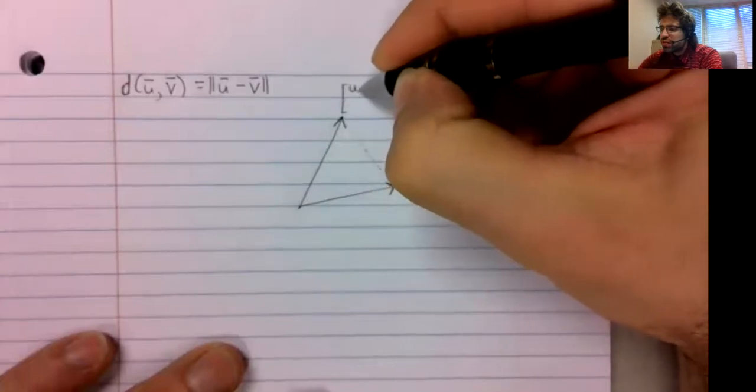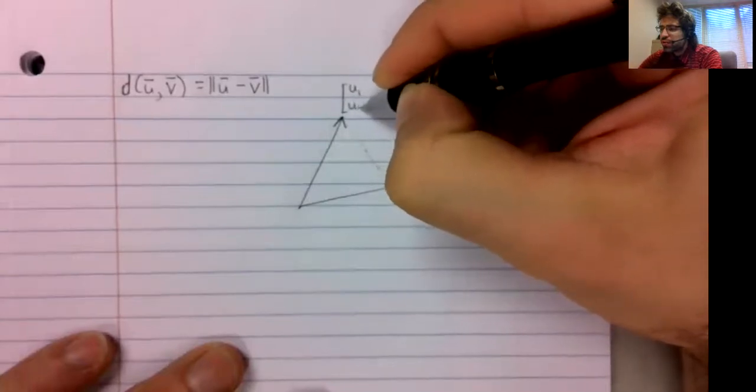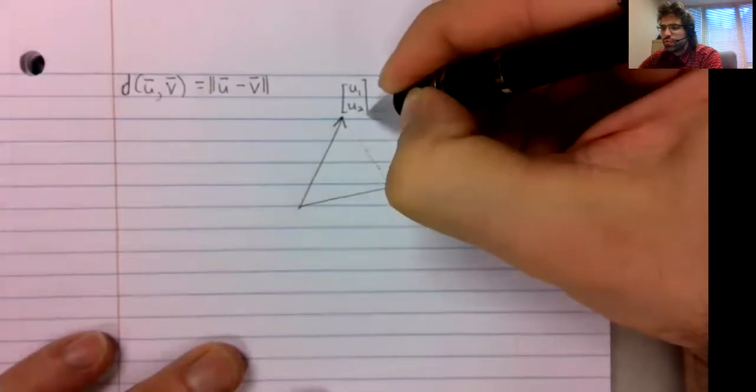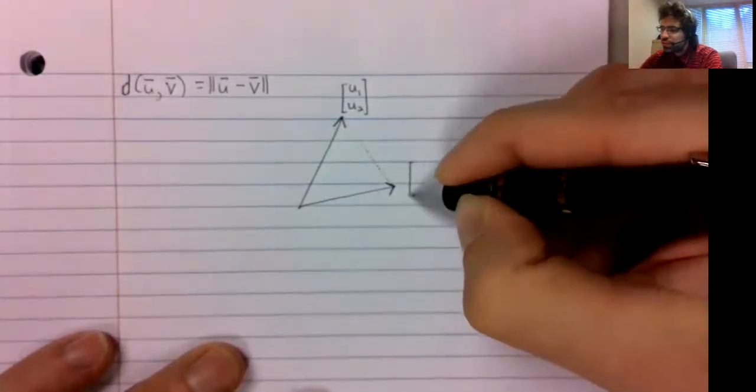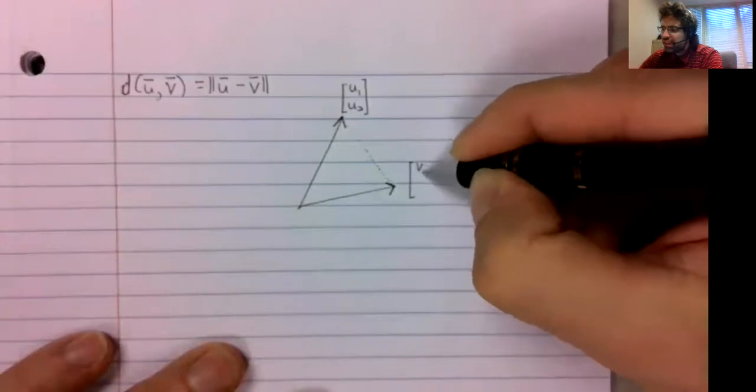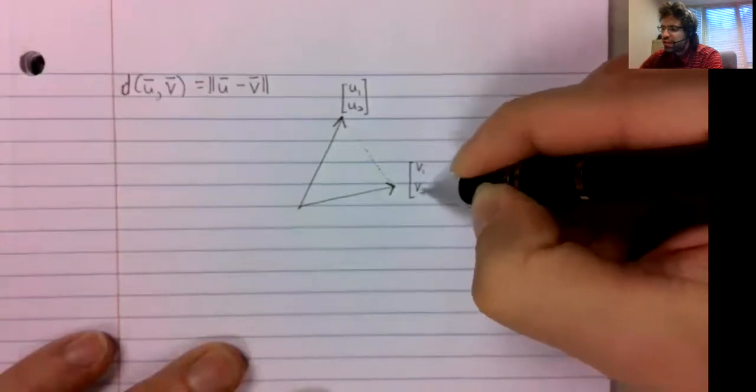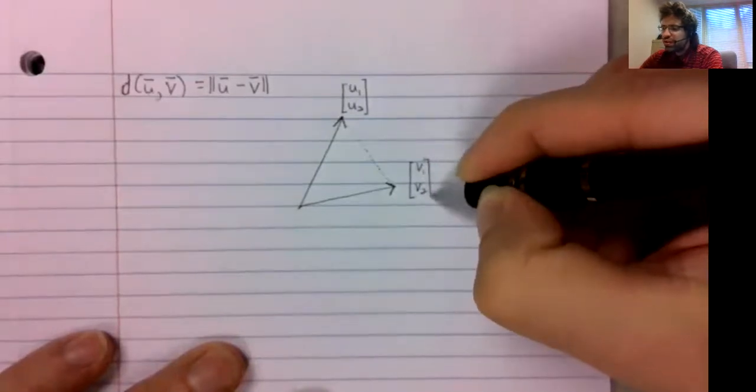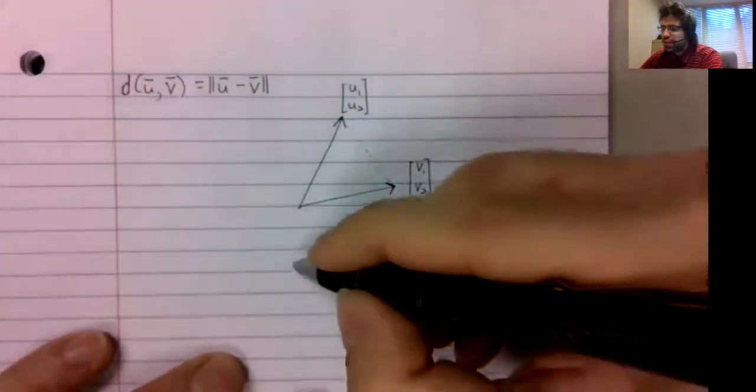If this is the vector u1, u2, and this is the vector v1, v2...